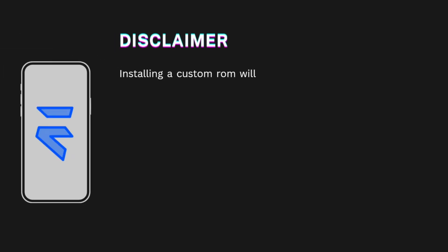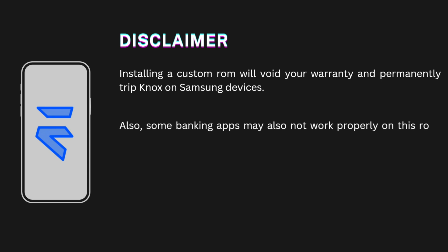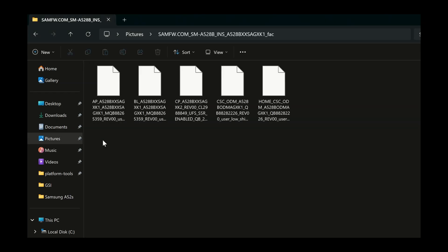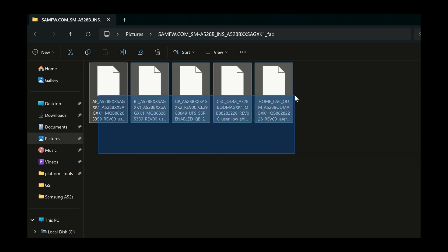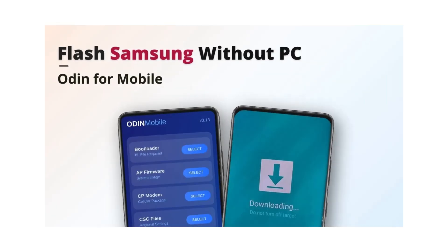But before we start, a quick disclaimer. Installing a custom ROM will void your warranty and permanently trip Knox on Samsung devices. Also, some banking apps may not work properly on this ROM, depending on the app's security. And yes, there's a chance your phone could get stuck in a boot loop. So make sure to download your stock firmware first, just to be safe. If something goes wrong, check the boot loop fix video linked in the description.